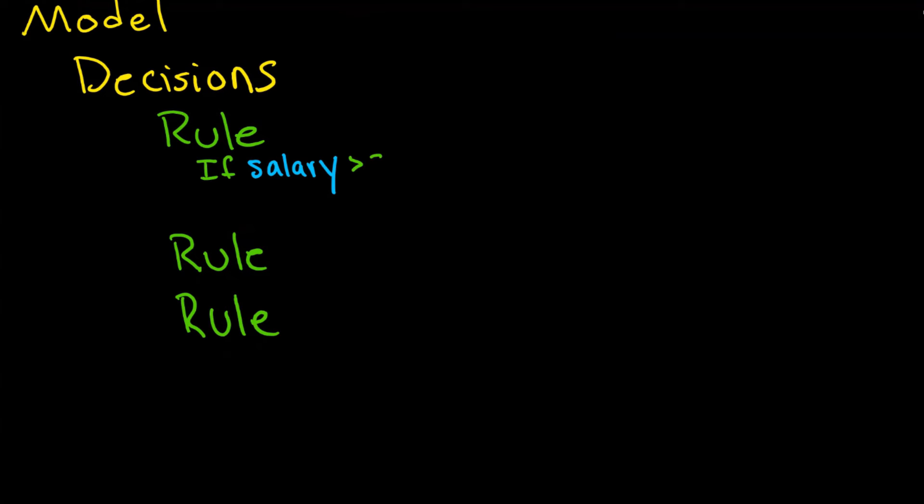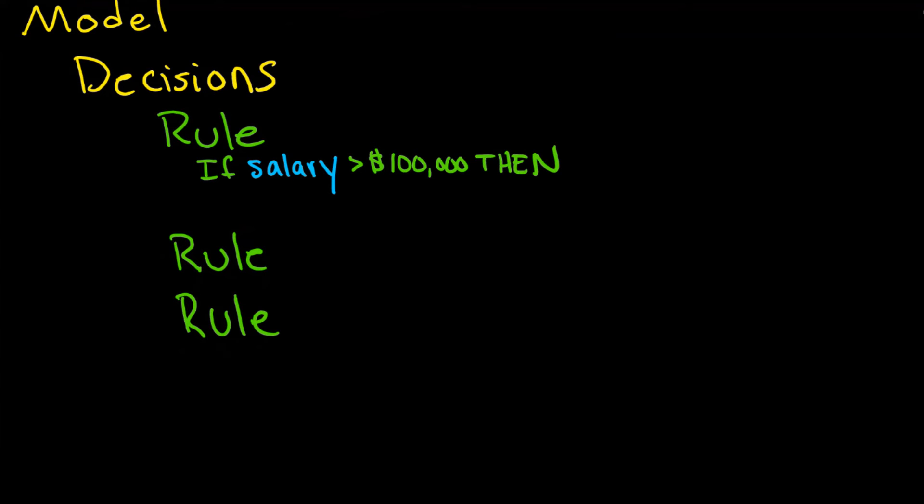And then you give it some threshold, some condition, say $100,000, and you say then. So this would be an example of a rule.